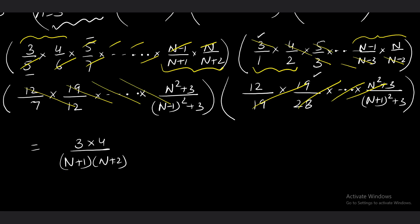What we are left with is (3 × 4)/[(n + 1)(n + 2)], second factor [n(n - 1)]/(1 × 2), the third bracket reduces to (n² + 3)/7, and the fourth bracket gives 12/[(n + 1)² + 3]. This is the product of n terms. But we need the product of infinite terms.